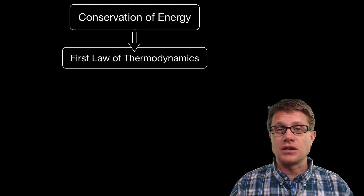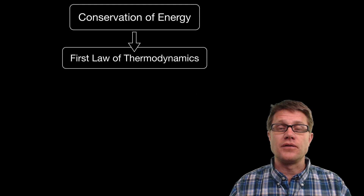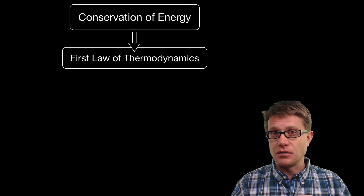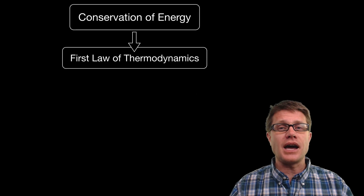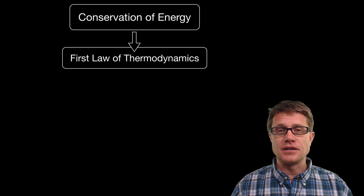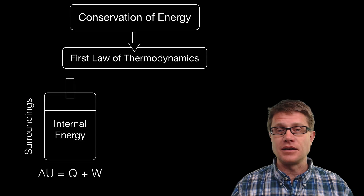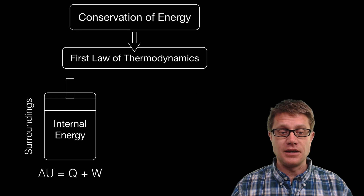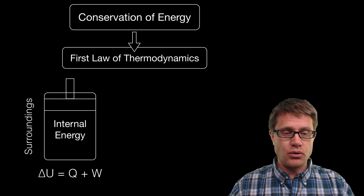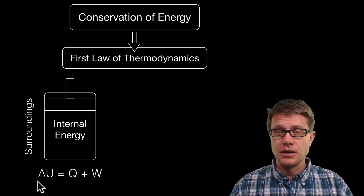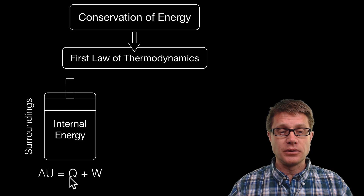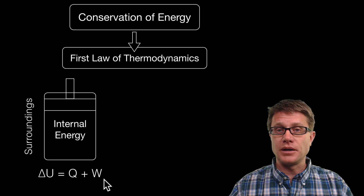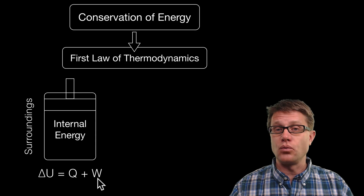A part of the conservation of energy is the first law of thermodynamics: energy can neither be created nor destroyed. We are going to study how this applies in a typical idealized gas in a piston. Our equation is delta U — the change in internal energy — is equal to Q plus W. Q is going to be heat and W is going to be work.